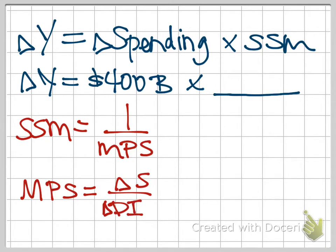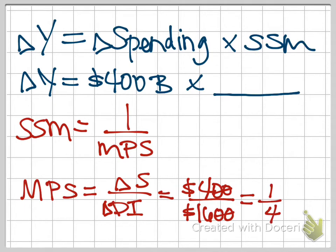So we're going to plug those numbers in. So we had a change in savings of $400, and we had a change in disposable income of $1,600, and so we find once we get rid of some zeros, four goes into itself one time, four into 16 four times. So our MPS here is one-fourth, so one-fourth of all new income is saved instead of spent.